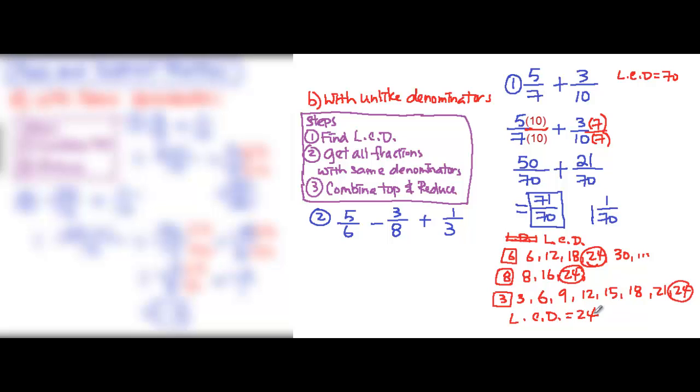After we find the lowest common denominator, we need to try to get all the fractions with 24 as the denominator. So 5/6 here, 3/8, and 1/3.